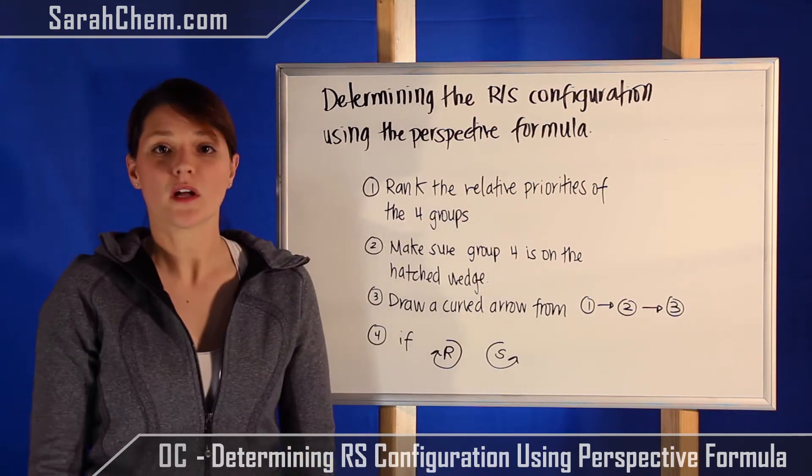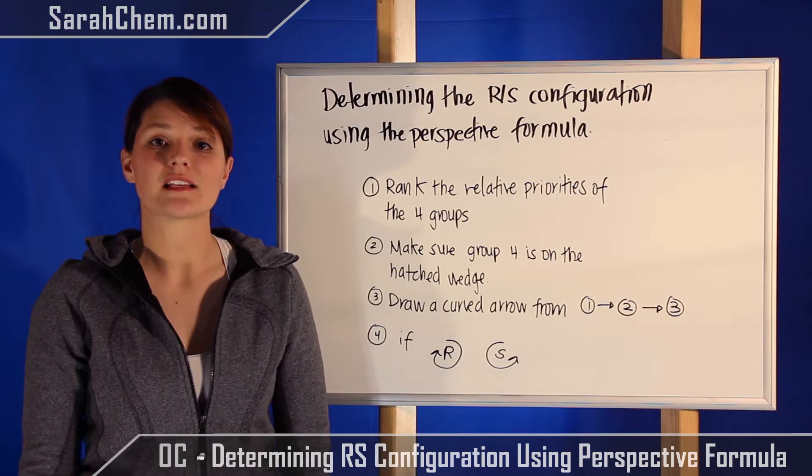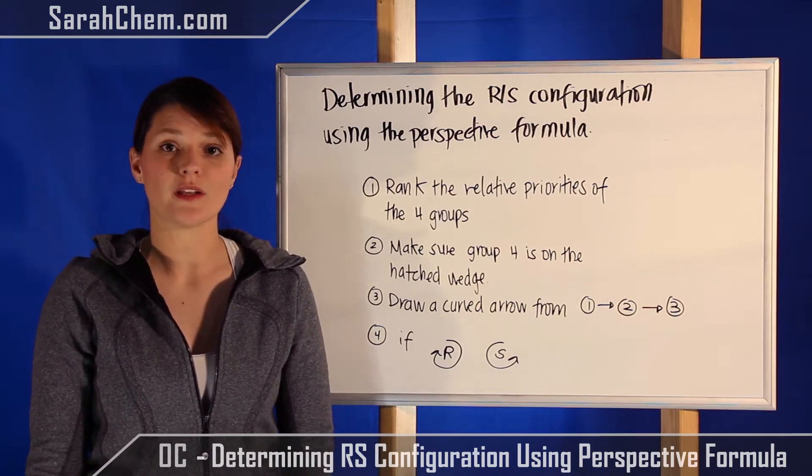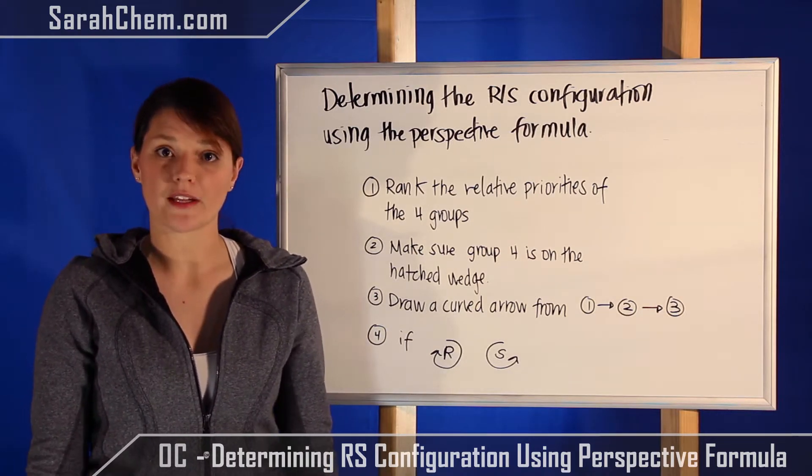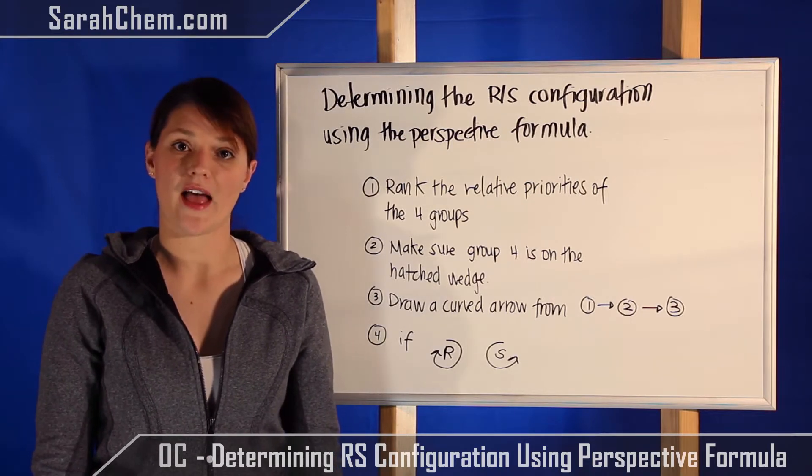The second step is you want to make sure that the fourth position is placed on the hatched wedge. This is a vital part to it—it cannot be skipped, and we'll look at how we would deal with it if it wasn't on the hatched wedge.